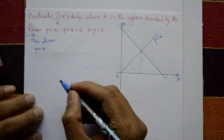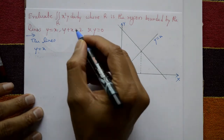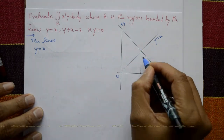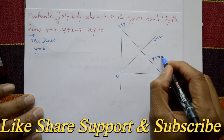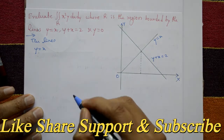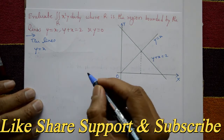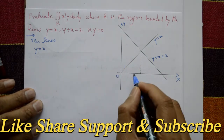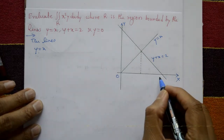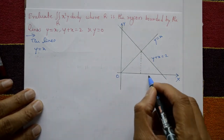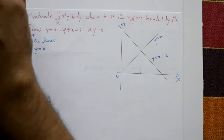Next, y plus x equals 2 — this straight line is y plus x equals 2. And y equals 0 means the x-axis, where the y value is 0.